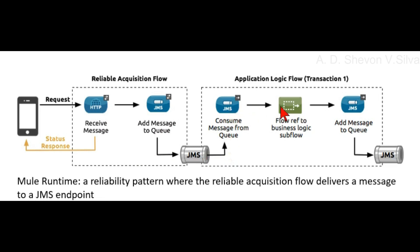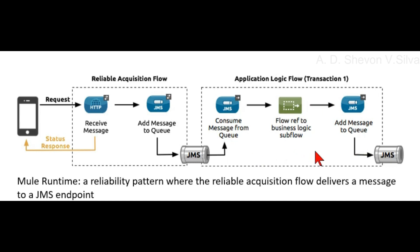The consume step is connected via a flow reference to the business logic subflow, and then connected to add the message to the queue. The consume step is also connected to JMS, and then references the business logic subflow and adds the message to the queue in the application logic flow transaction.